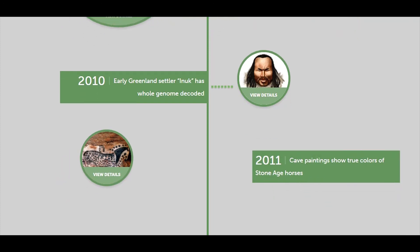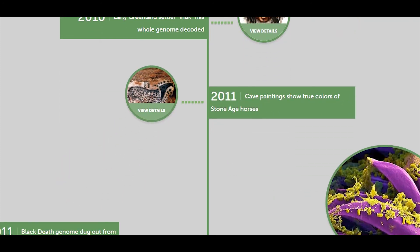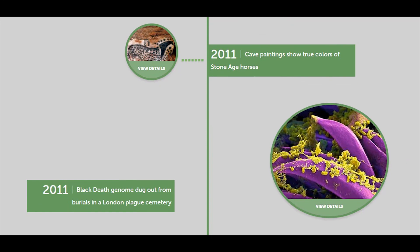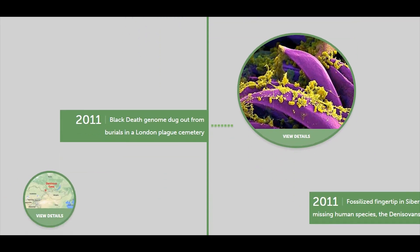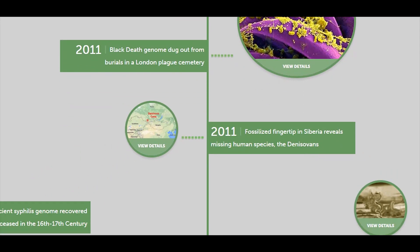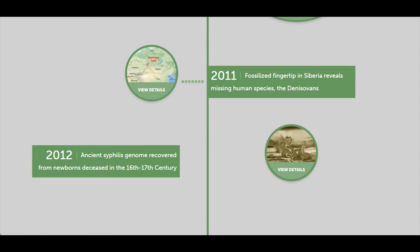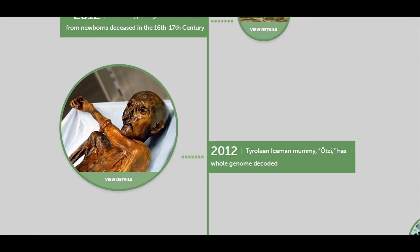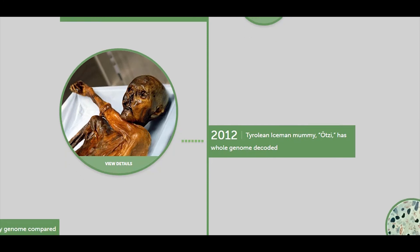In 2010, an early Greenland settler had their whole genome decoded. In 2011, cave paintings showed the true color of Stone Age horses. In 2011, the Black Death genome was dug out from burials in the London flood cemetery. In 2011, a fossilized fingertip from Siberia revealed a missing human species — the Denisovans.